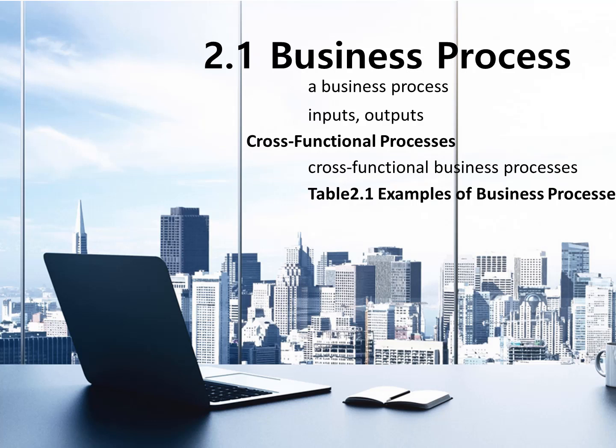What happens before the process are inputs. So the flow is inputs, processes, and outputs. We also have feedback. These four elements form a system in any context, such as weather systems, a computer, a bird, a tree, grass — all of these things have input, process, output, and feedback mechanisms. This is general systems theory.